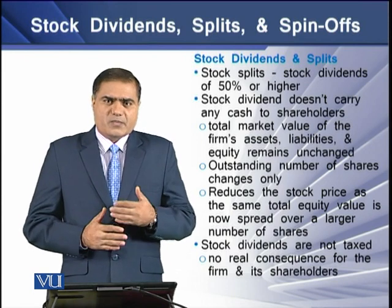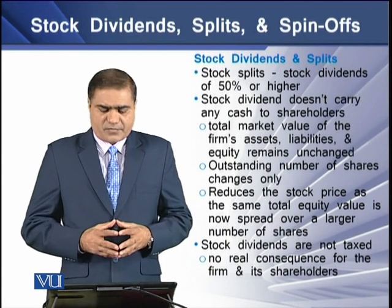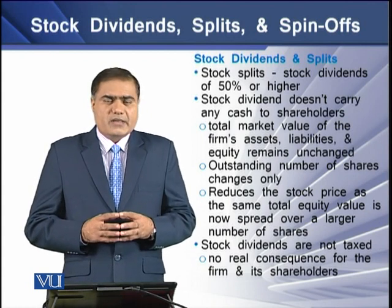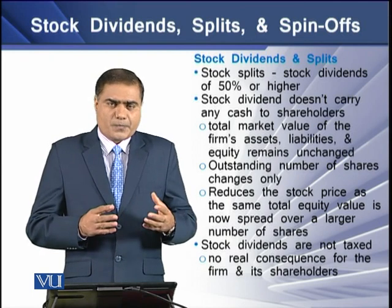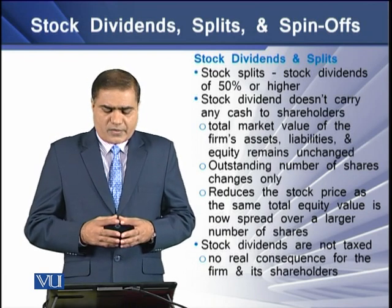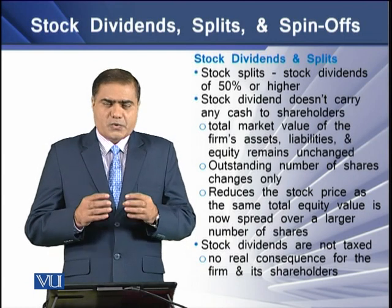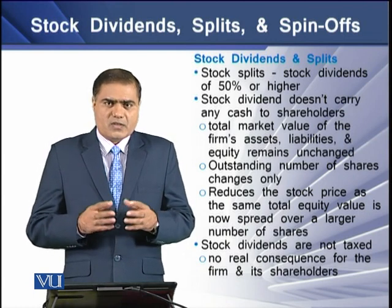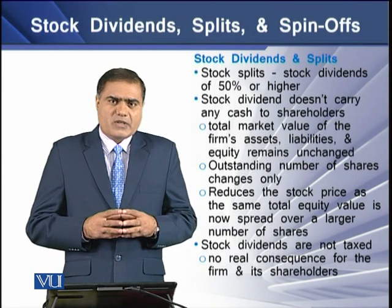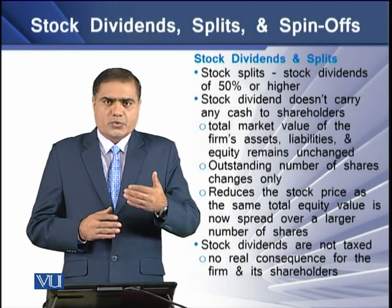Stock split generally takes place where the dividend rate goes as high as over 50%. Stock dividend does not carry any cash distribution among the shareholders, which means there is no change in the firm's value — no change in the assets, liabilities, and equity of the firm. However, the outstanding number of shares increases in the market, and due to this, there is a reduction in the stock price of the firm's shares. Because there is no change in equity but the number of outstanding shares has increased, this increase causes the share price to go down.